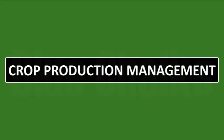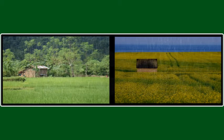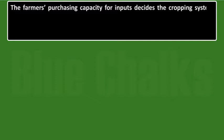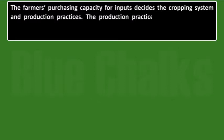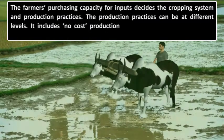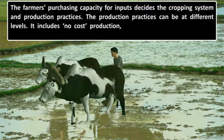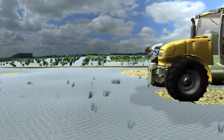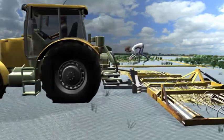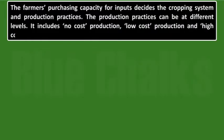Crop Production Management. In India, farming is done from small scale to large scale. It is the financial conditions or money which allows the farmers to take up different farming methods and technologies. The farmers' purchasing capacity for inputs decides the cropping system and production practices. The production practices can be at different levels — no cost, low cost, and high cost.